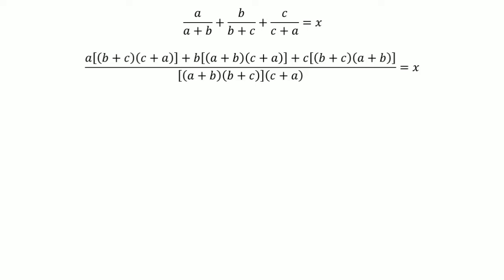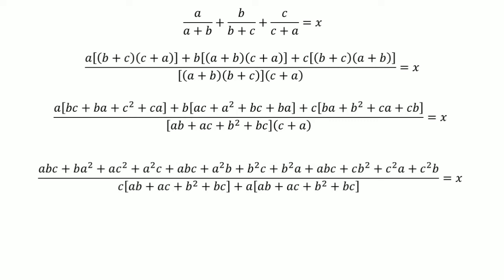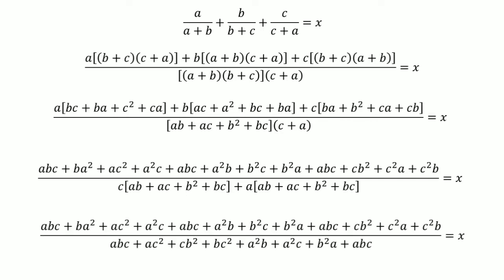We proceed by opening the square parentheses first, then all remaining parentheses step by step. After fully opening the square parentheses you get an expanded numerator, and after opening all parentheses in the denominator you get the fully expanded denominator.